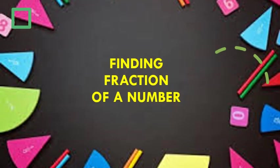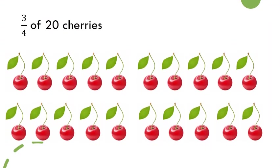Firstly, let us see how to find fraction of a number. In this slide you can see there are 20 cherries and we have to find out what will be 3/4 of 20 cherries. Our fraction here is 3 by 4. So depending upon the denominator, we will first be dividing these 20 cherries into 4 equal groups. Let us see how we can do that.